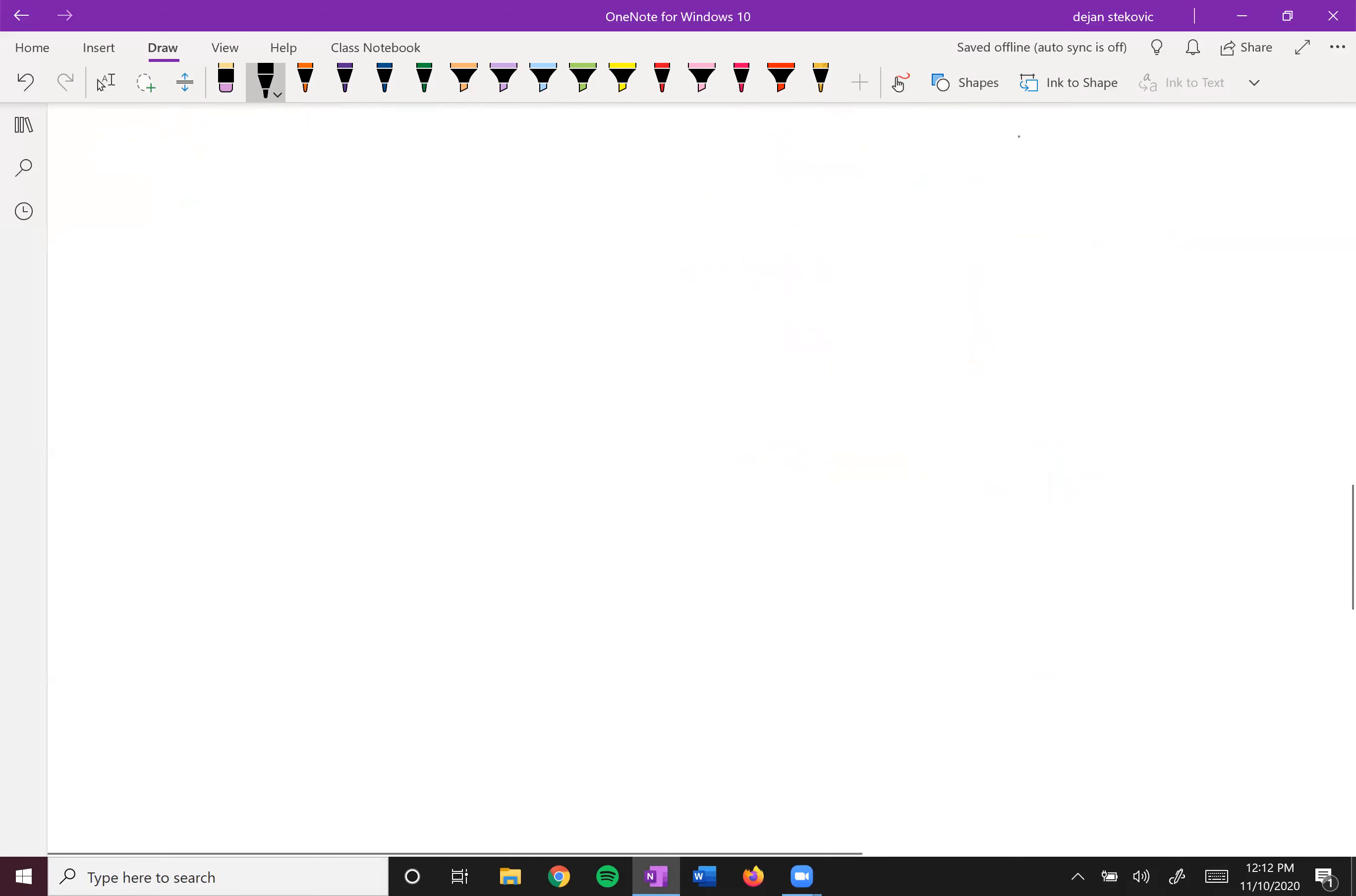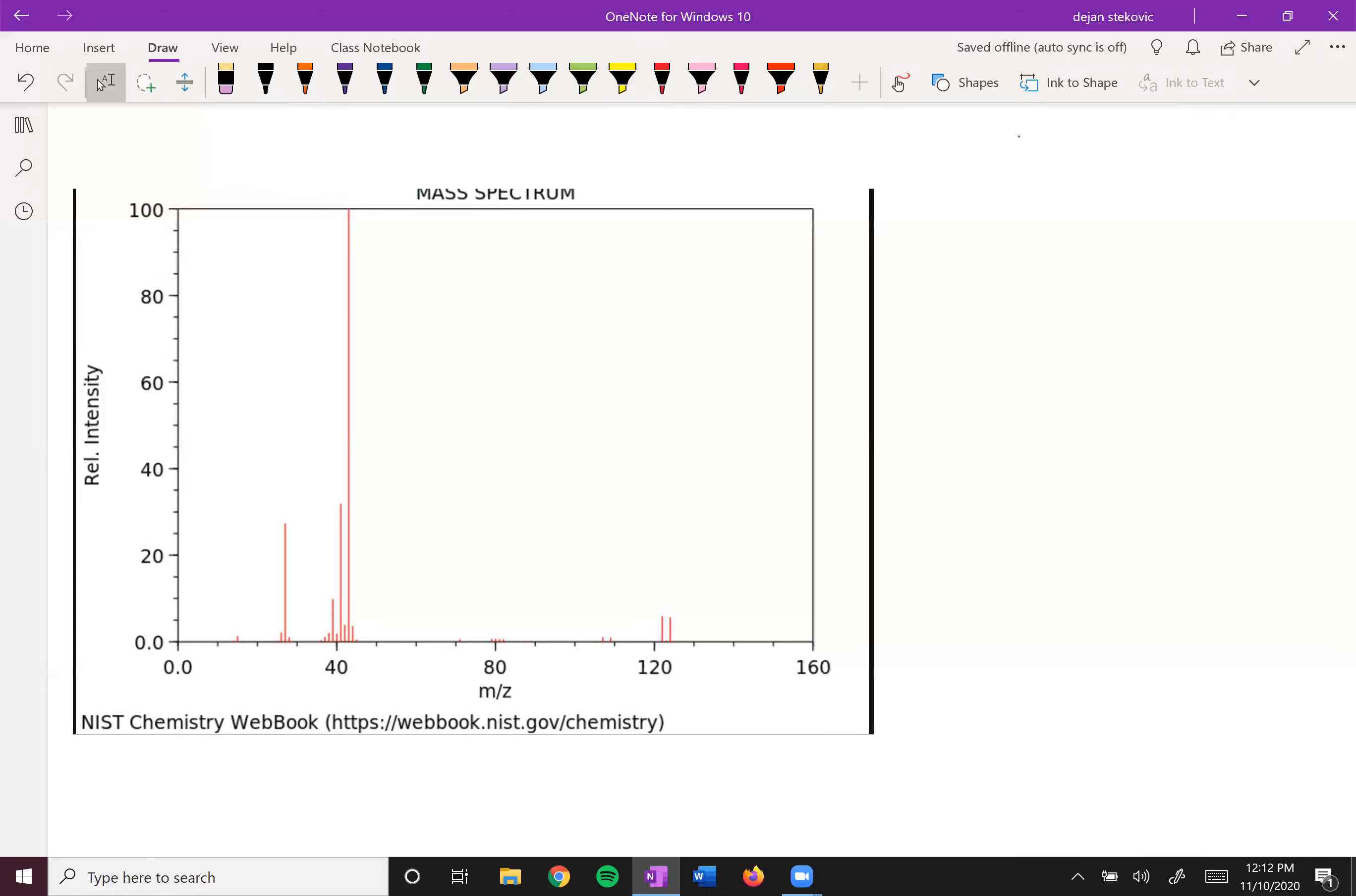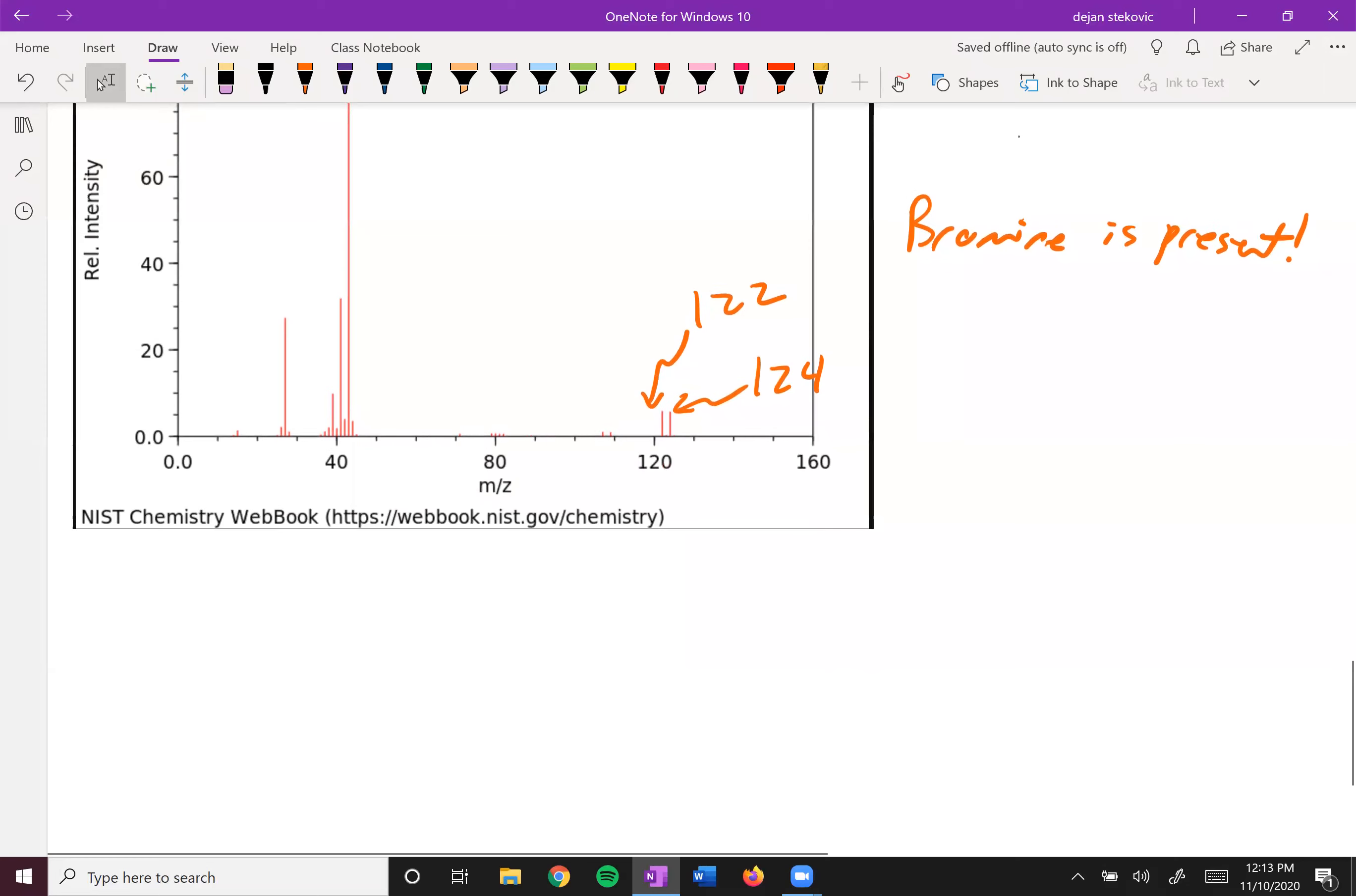So let's take a look at an example. And so here we have a mass spectra. We go ahead and find our molecular ion peak. And what we notice here is that we have two evenly sized peaks. That must mean that bromine is present. So we used that clue there. And then if we were to take a look at our masses here, this would be 122 grams per mole. And then this other one would be 124 grams per mole. And so we know that bromine is present.